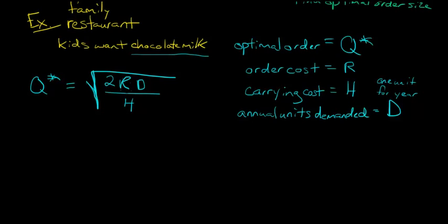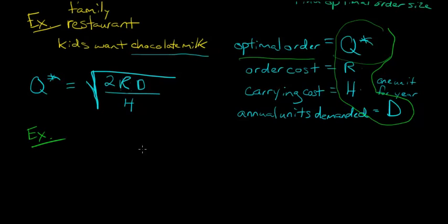So let's take our example here. So in our example, we're going to have to put some numbers to these items right here. Well, not Q star. Q star is what we're actually solving for. But we have to have an R, an H, and a D in order to plug in here and find out our optimal order size, how many chocolate milks we want to order.